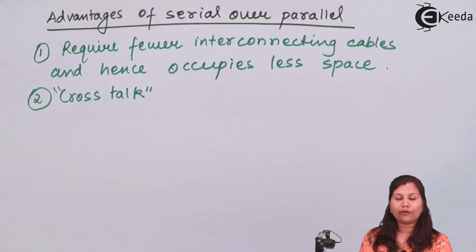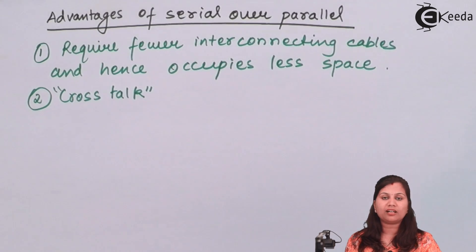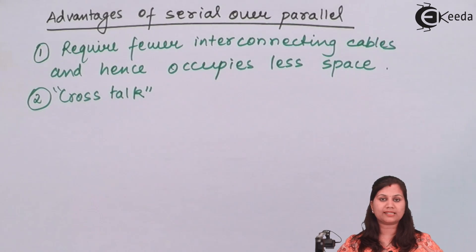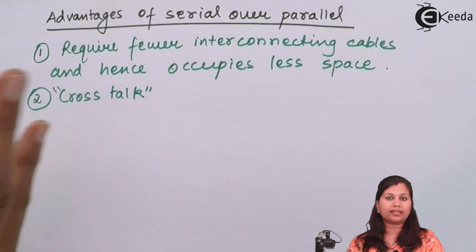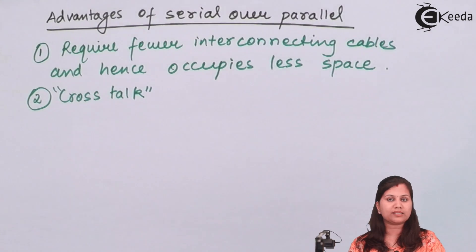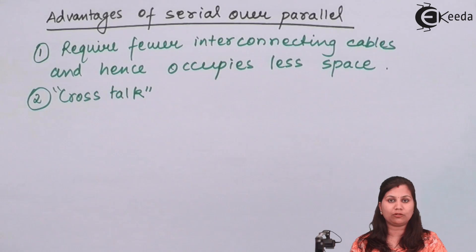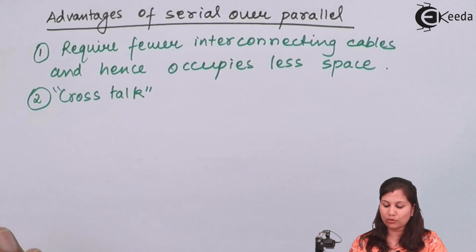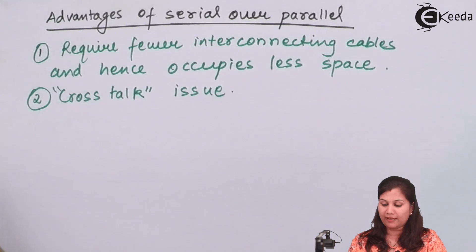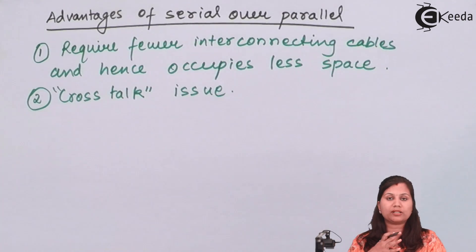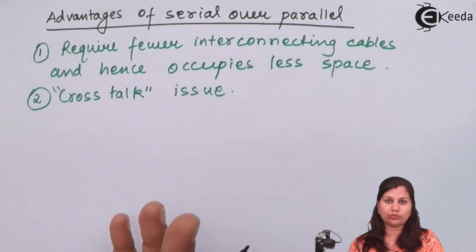Cross-talk is a kind of problem which occurs when several wires are used — the data transmitted on each wire can get mixed with adjacent wires. This issue does not occur in serial transmission because there is only a single line over which all the data is transmitted, so there is no cross-talk issue. In parallel transmission, because there are several wires, data from different wires can mix, causing cross-talk.